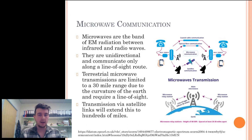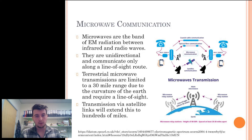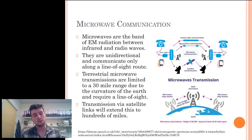Microwaves are a band of EM radiation between infrared and radio waves. Microwaves are unidirectional and communicate only along a line of sight route. Radio waves, however, are broadcast in all directions. Terrestrial microwave transmissions are limited to about a 30-mile range due to the curvature of the earth and require a line of sight.